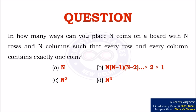In how many ways can you place N coins on a board with N rows and N columns such that every row and every column contains exactly one coin?